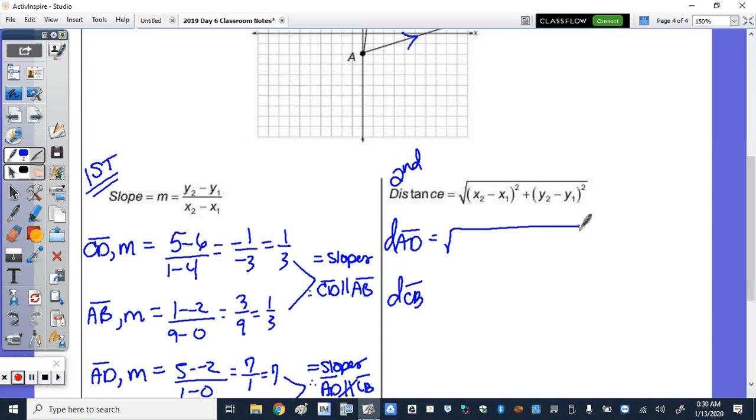Plugging in the formula, when I subtract the X's, we get 1. So 1 squared plus subtract the Y's, we get 7 squared. And for CB, subtracting the X's, we get a negative 5 squared. Subtracting the Y's, we get a positive 5 squared.